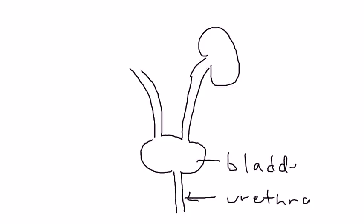I'll draw the GU system here just to illustrate what pyelonephritis actually is. So this is your urethra, this is your bladder, and then these are the ureters — the two ureters on each side. Pyelonephritis is referring to an infection of the renal pelvis, which is this area right here.